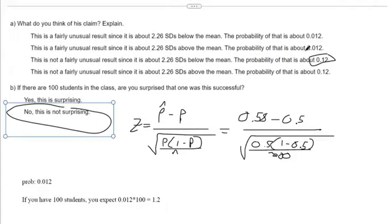And then if you had an even bigger probability, 0.12 times 100, that's 12. You expect 12 students to have this result.